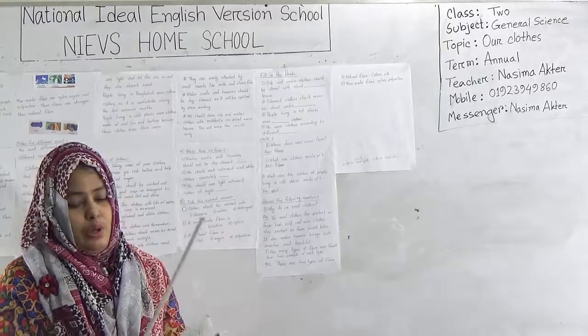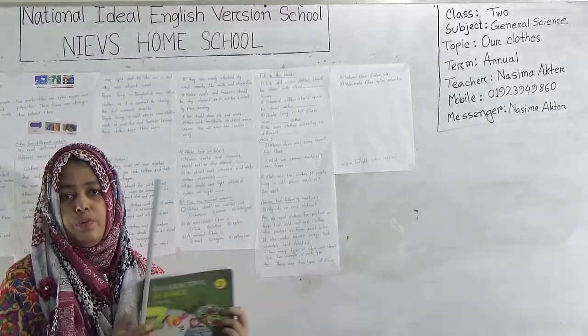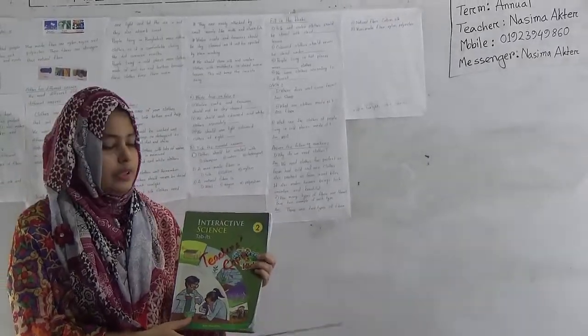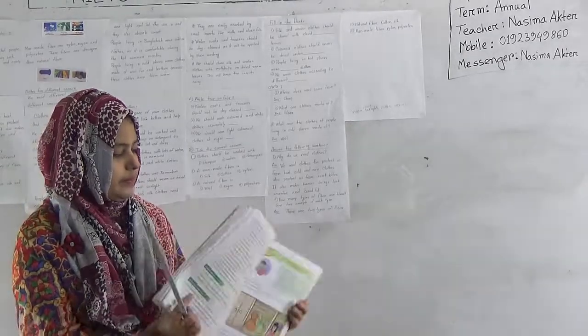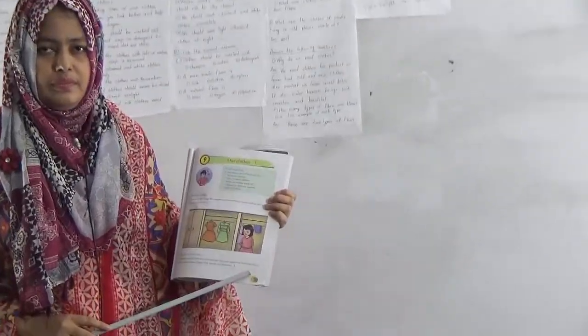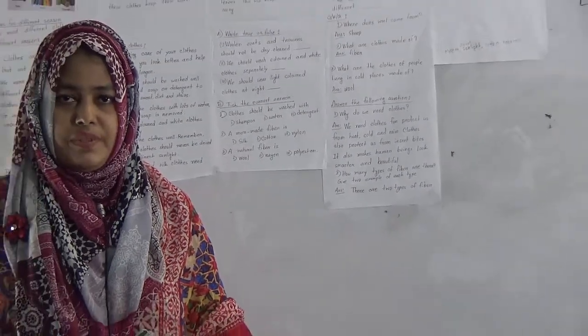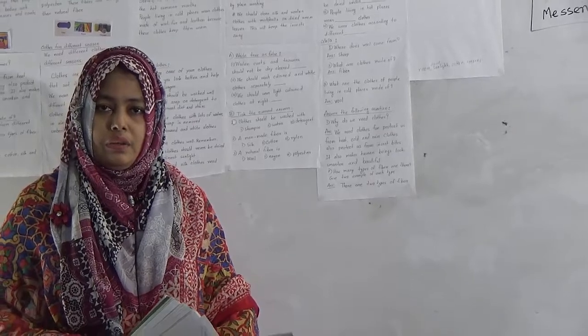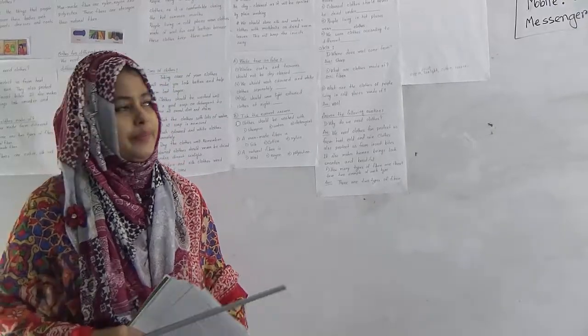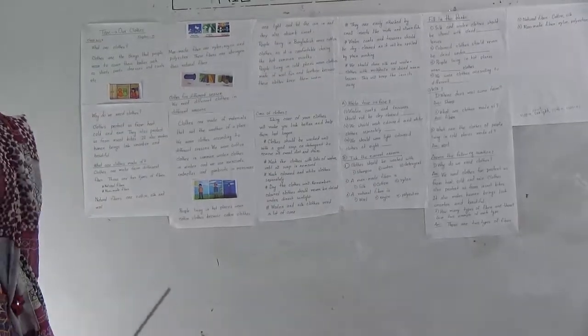Dear students, our today's topic is 'Our Class,' and this is your science book. When you are watching this video, please open your book. Our today's topic is 'Our Class' — this is page number 65. We wear different kinds of clothes. These clothes are of different colors, shapes, and sizes, and we wear our clothes according to the season and weather. So let's start today's class.